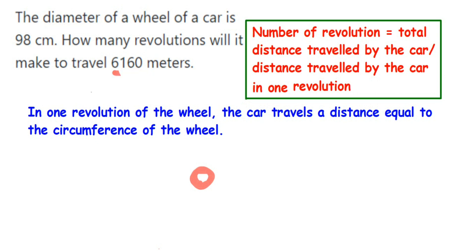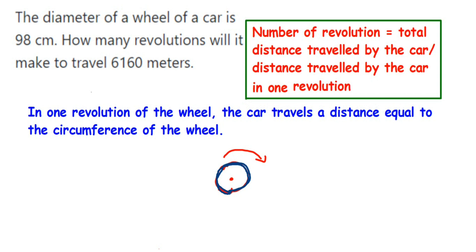We have to find the number of rotations — that is, how many times the wheel is rotating. Suppose this is a wheel, and this is a starting point. When it rotates in the right direction, it will complete one revolution, covering a distance equal to the circumference of the wheel. So in one revolution, it covers the circumference once, and in two revolutions, it covers twice the circumference.